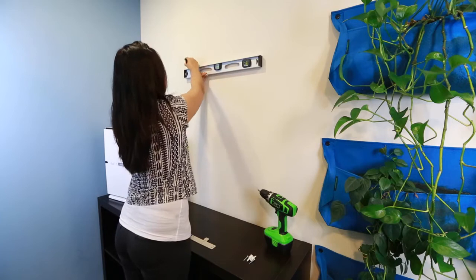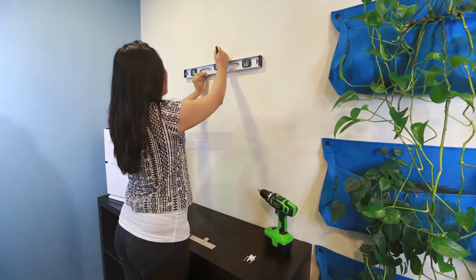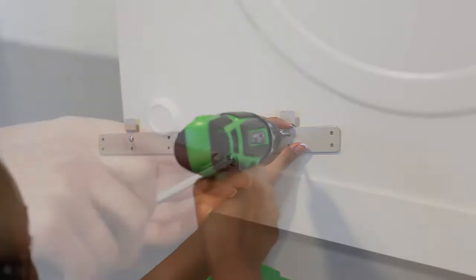Using a level, carefully mark the wall where you would like the wall mount bracket to hang. Secure the wall mount bracket to your wall.